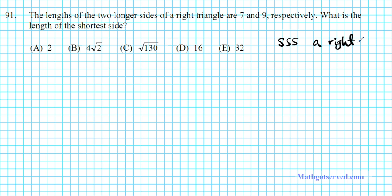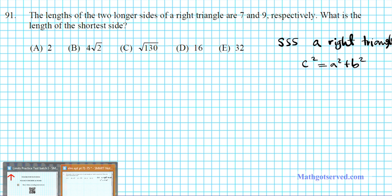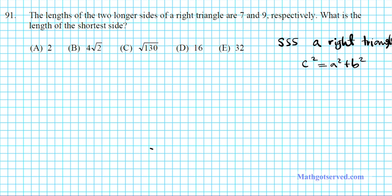Anytime you're dealing with SSS and a right triangle, you're going to use the Pythagorean theorem: C squared equals A squared plus B squared. Also, whenever you're given measurements or dimensions of a shape in verbal form and asked to carry out computations, it's always advisable to draw a sketch — give yourself a visual so you can label your sides correctly and apply the formula without making mistakes.